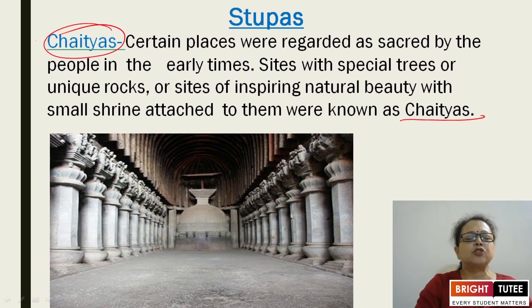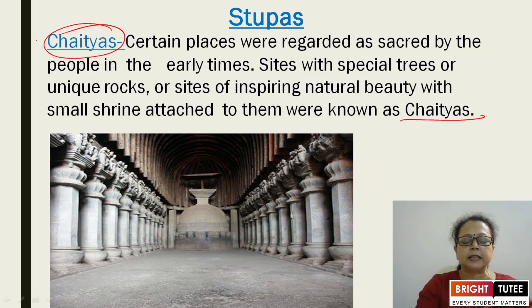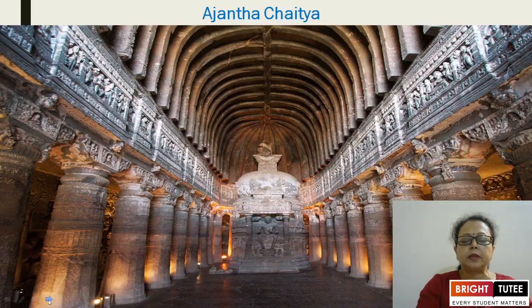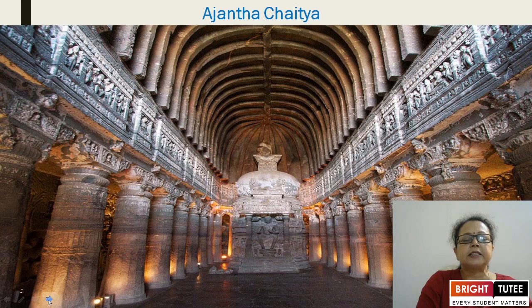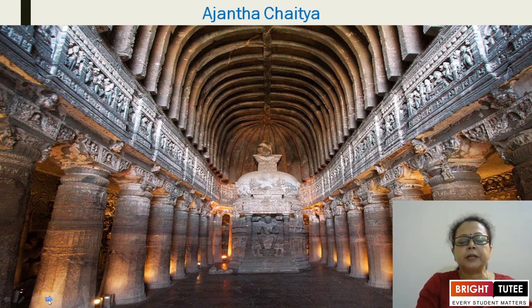These places were regarded as sacred by people in early times and they were calling them chaityas. Then Ajanta Chaitya — this is the cave of Ajanta, where there are pillars, sculptures, and miniature paintings, all related to the Buddha's life. His life in the form of a story is depicted here.